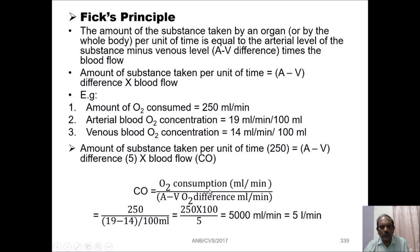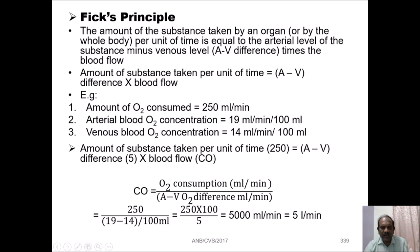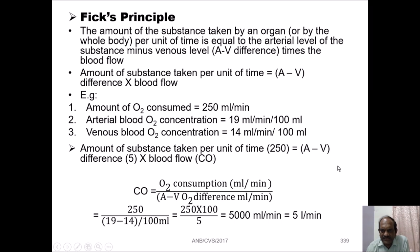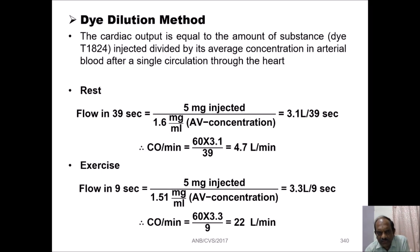Hence, cardiac output equals O2 consumption per minute divided by the A-V difference. That is: 250 multiplied by 100 divided by 50, which comes as 500 ml per minute — that is 5 liters per minute. This is the cardiac output determined by the Fick principle.